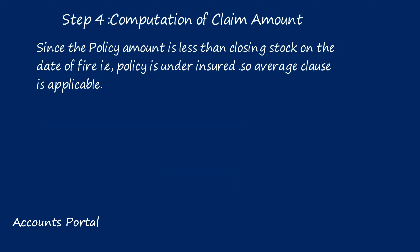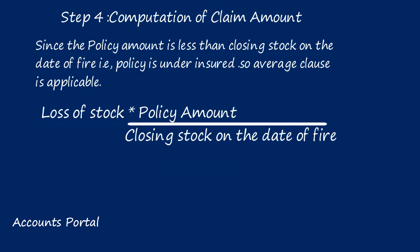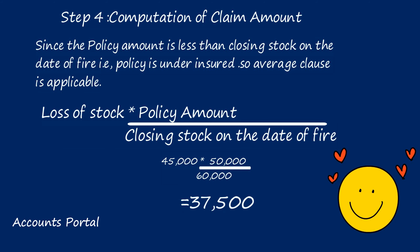Since the average clause is applicable, claim amount is calculated proportionately: loss of stock × policy amount ÷ closing stock on the date of fire. Loss of stock: ₹45,000. Policy amount: ₹50,000. Closing stock on date of fire: ₹60,000. So claim amount = ₹45,000 × ₹50,000 ÷ ₹60,000 = ₹37,500.